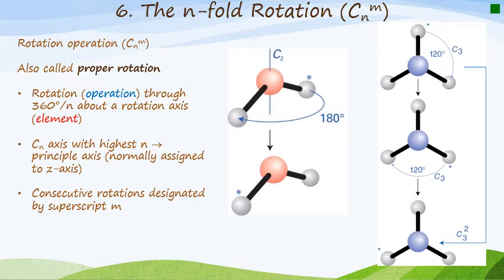And there are two topics or things that we can talk about here, this n and the m. So the rotation operation is also called a proper rotation. It's generally an operation or rotation through a 360 degree divided by n about a rotation axis. So for example, now the identity operation is 360 degrees divided by one.